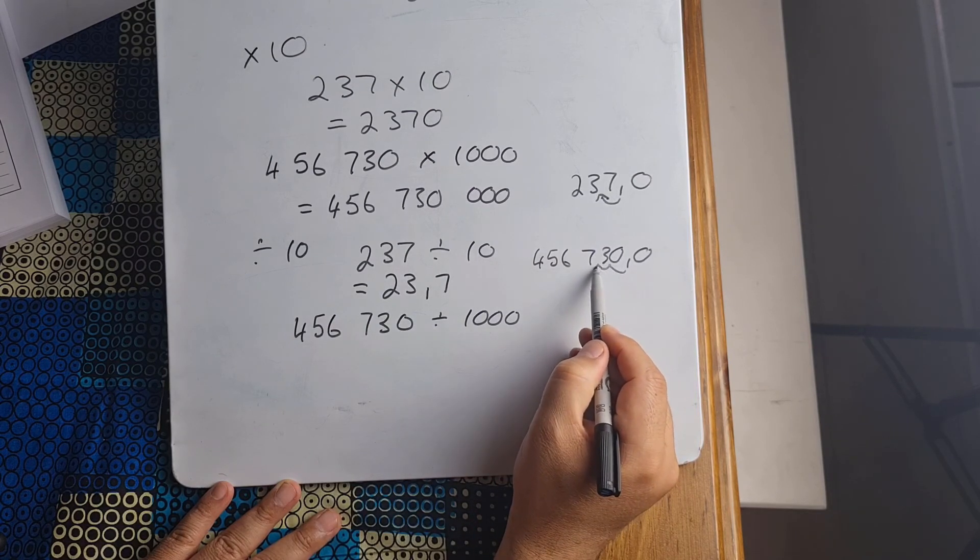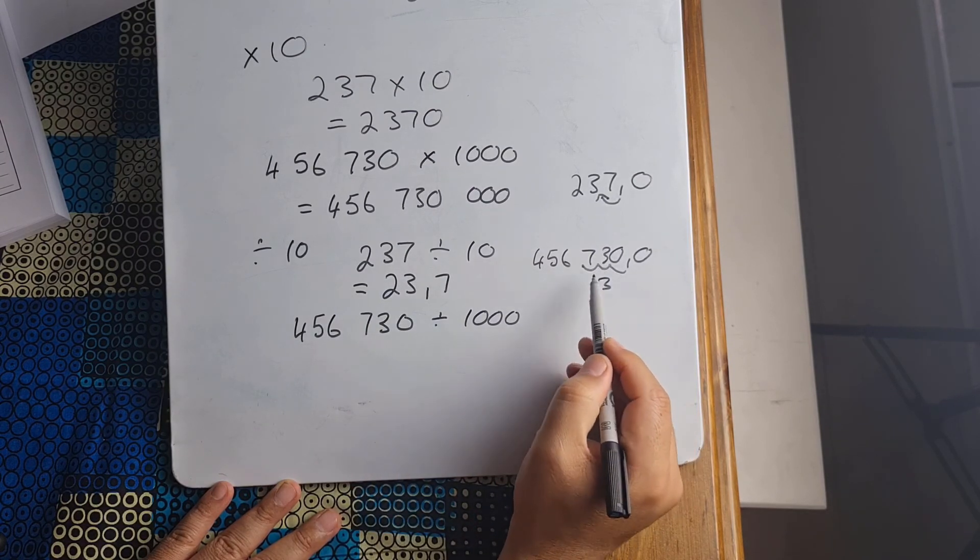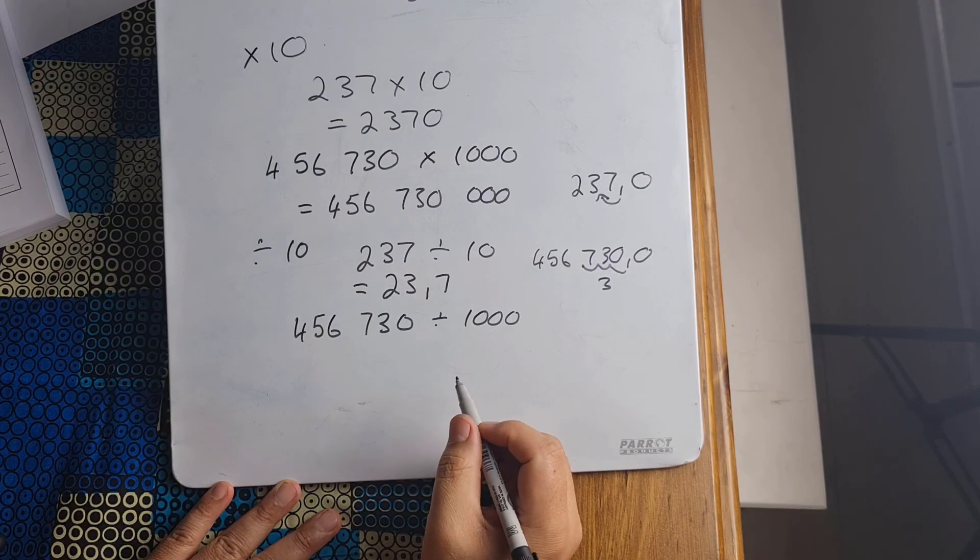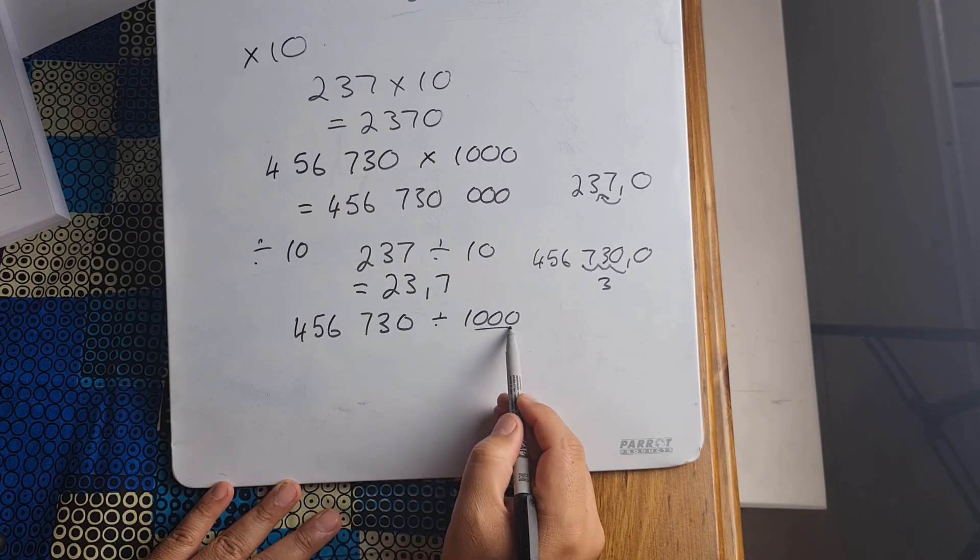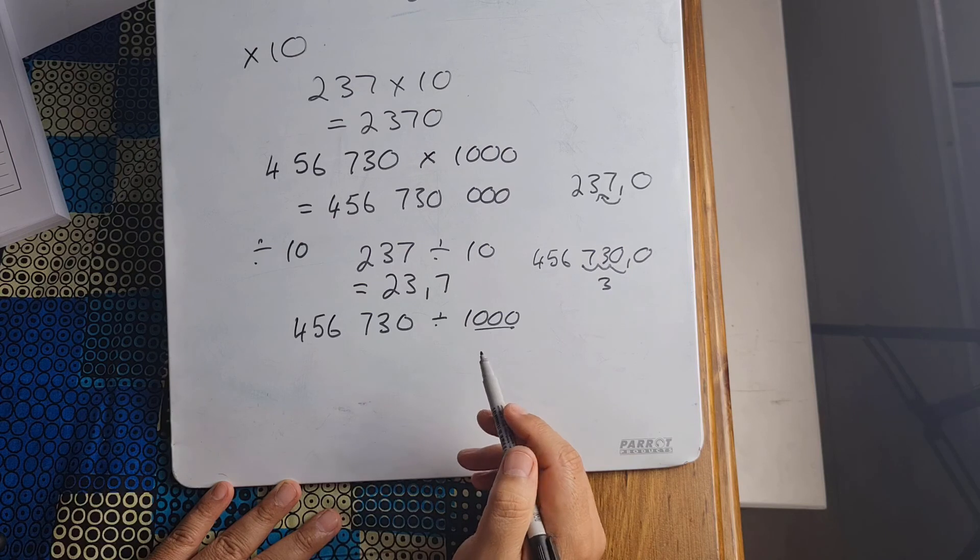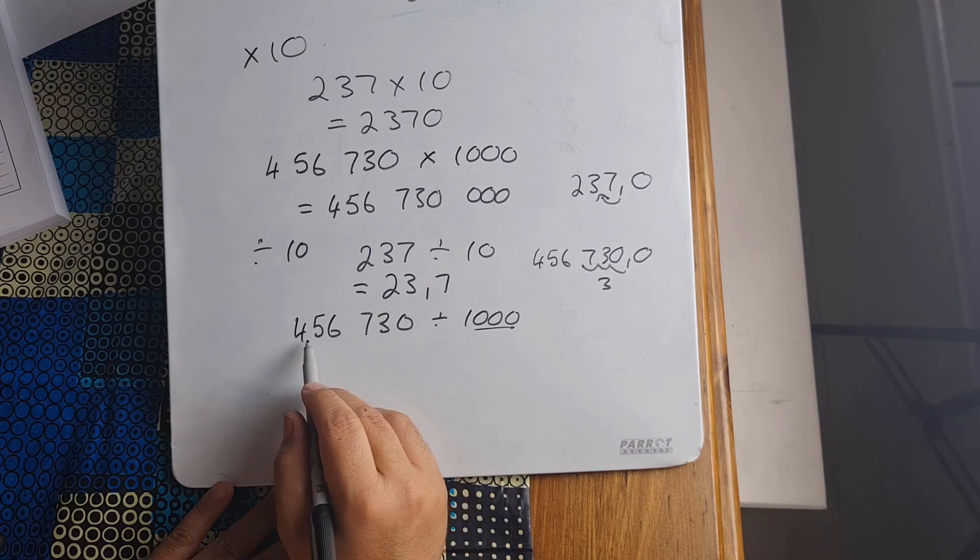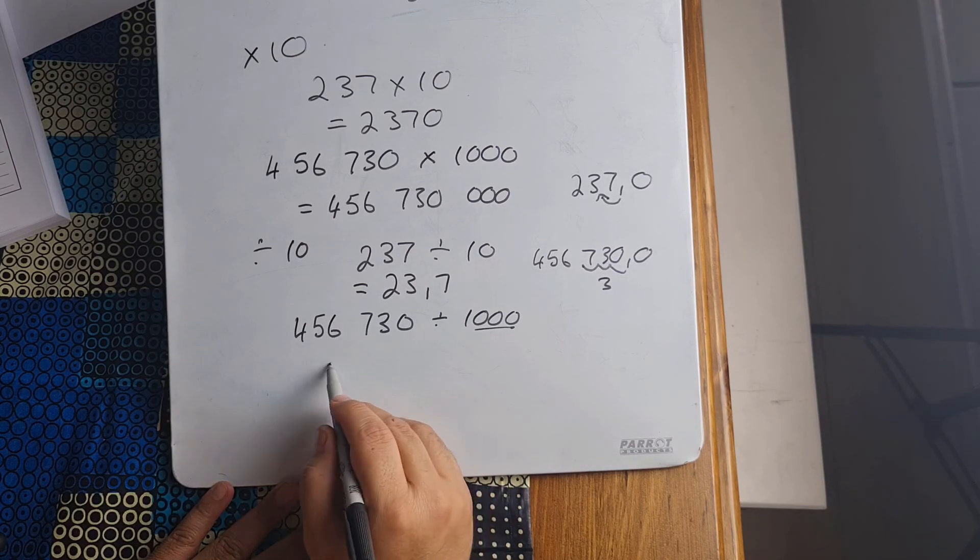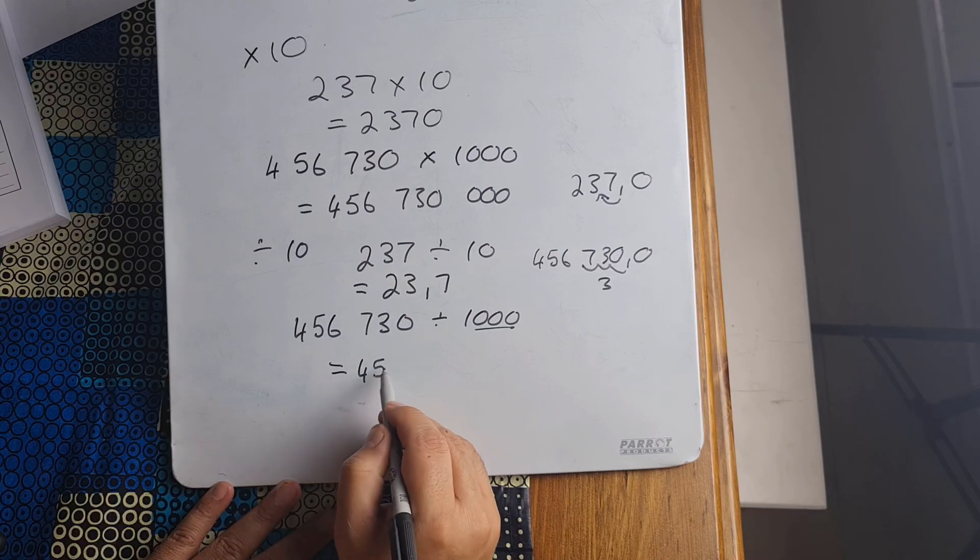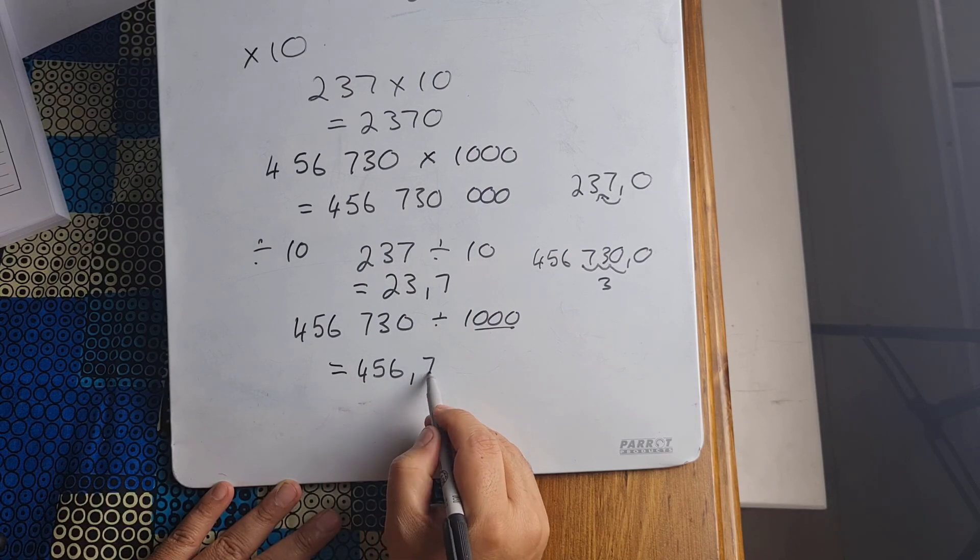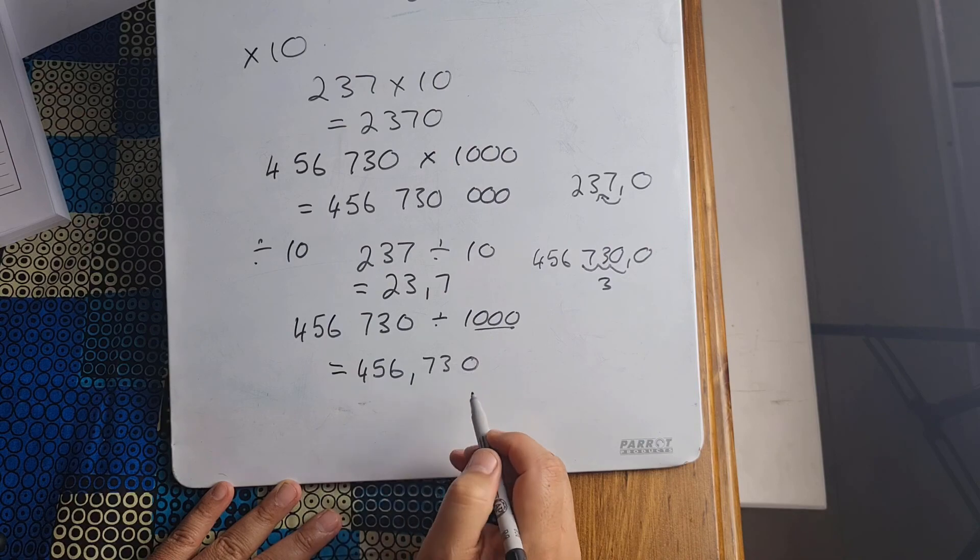one, two, three spaces forward. Why am I moving the comma three spaces? Because I've got three zeros. So this number then moves from being 456,730 to being 456.730.